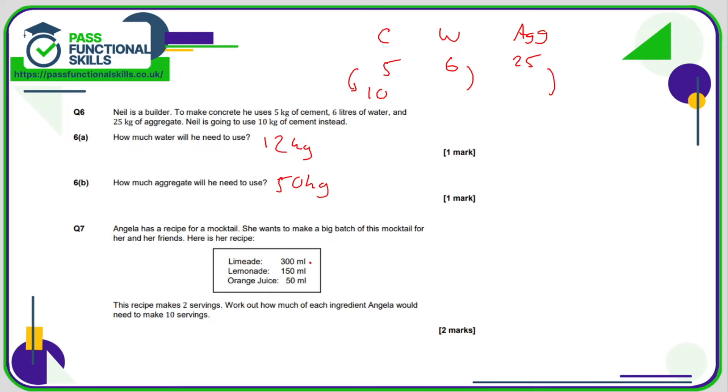Question number seven: we're allowed to use a calculator here. This recipe makes two servings, so if Angela's making 10 servings, she's going to need this recipe five times over. For limeade, she's going to need 300 times five, which is 1500 milliliters. For lemonade, it's 150 multiplied by five, which is 750 milliliters. And for the orange juice, it's 50 times five, which is 250 milliliters.